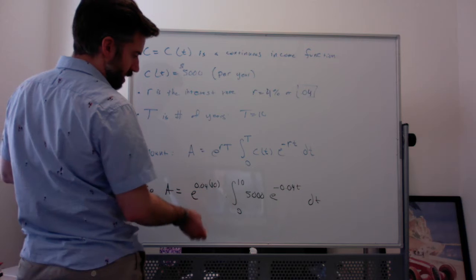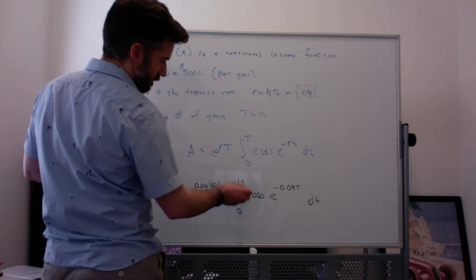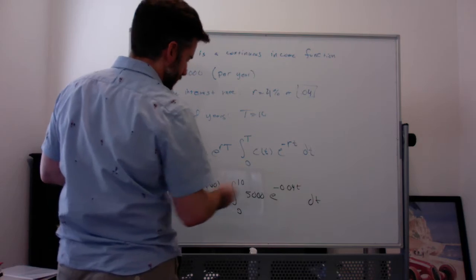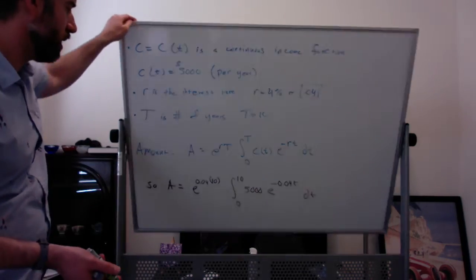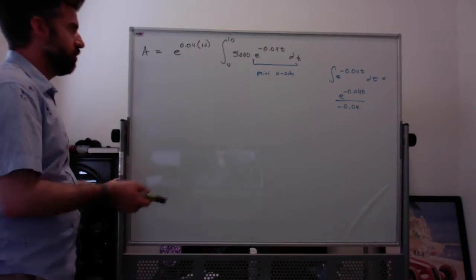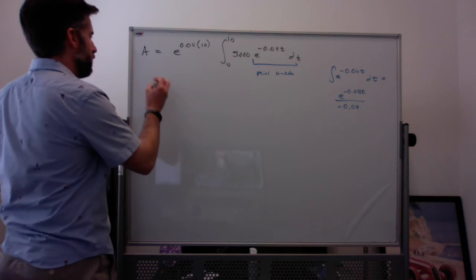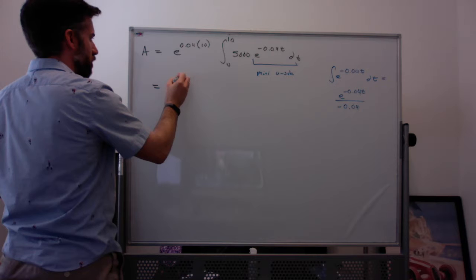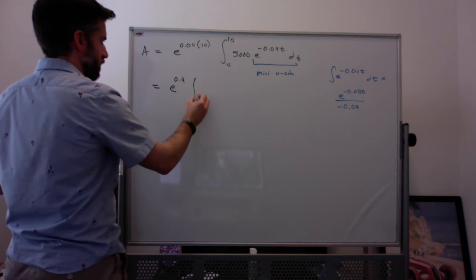we're going to have E to the 0.04 times 10 times the integral from zero to 10 of 5000, E to the negative 0.04t dt. So looking at the other side here, same integral, I'm going to simplify this a little bit. It's going to be E to the 0.4 integral from zero to 10.